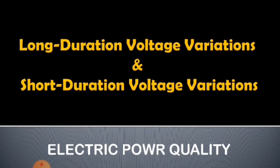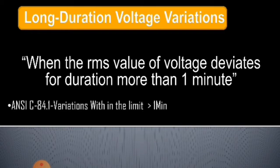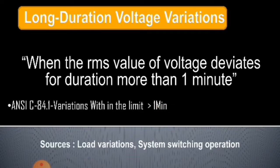Regarding the long duration voltage variations, when the RMS value of voltage deviates for a duration more than one minute. According to the American National Standard Institute C84.1, which specifies the steady state voltage tolerances expected on your power system, a voltage variation is considered to be long duration when the ANSI limits are exceeded for greater than one minute. The sources or causes of long duration voltage variations are load variations and system switching operations.